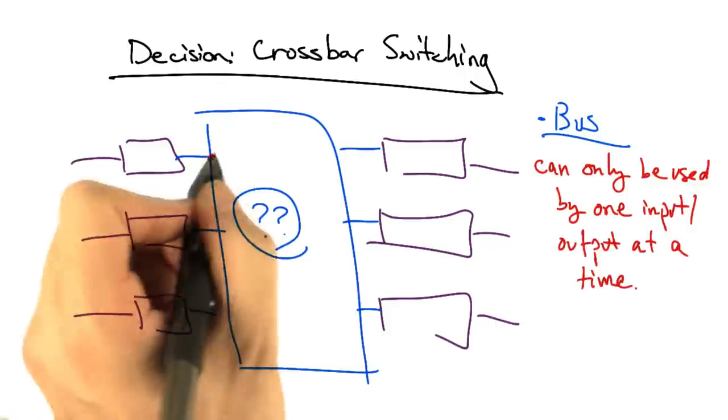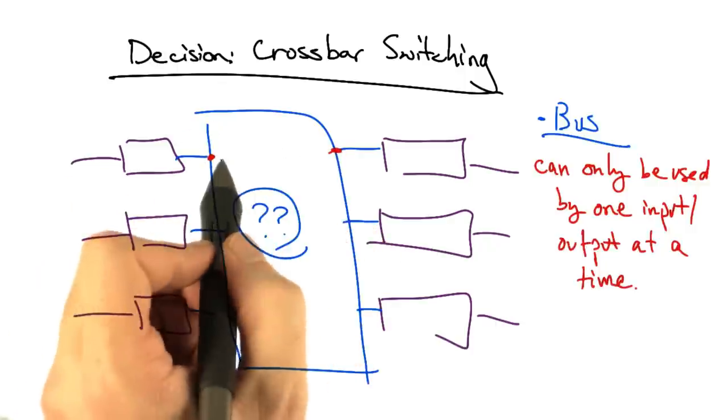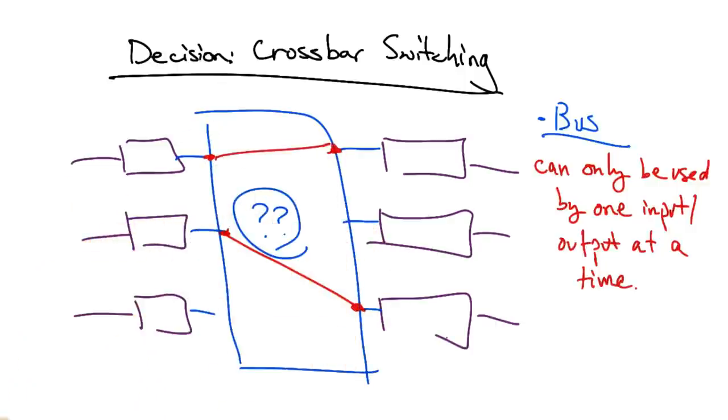What we'd like to do is enable input output pairs that don't compete to send traffic from input to output during the same time slot.